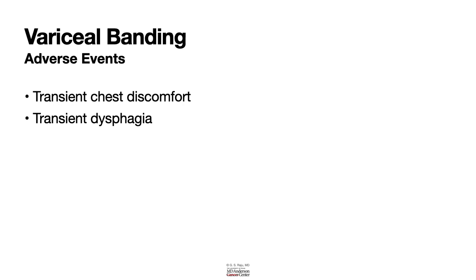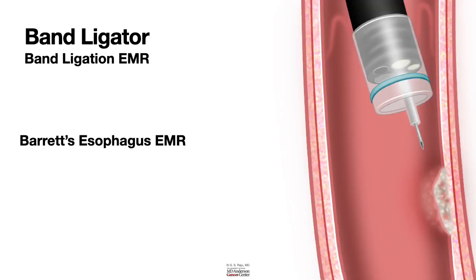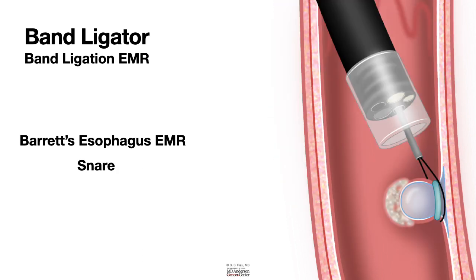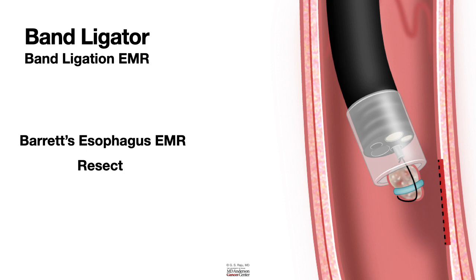We covered band ligation of varices; now let us look at other applications — band ligation EMR in patients with Barrett's esophagus. A multi-band ligator is used. Some providers place the band directly, while others do a little injection first, then place a band followed by snare resection, extending the amount of resection by applying more bands and repeating the steps.